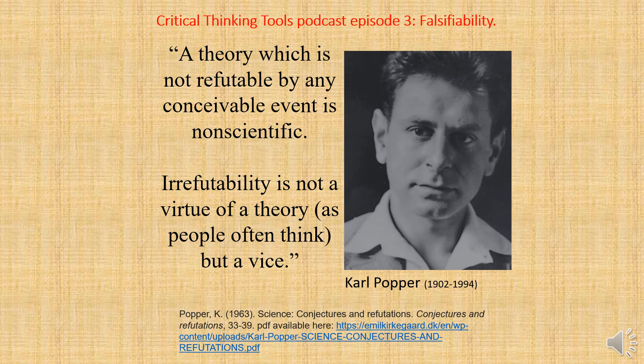Number six: 'Confirming evidence should not count except when it is the result of a genuine test of the theory, and this means it can be presented as a serious but unsuccessful attempt to falsify the theory.' Number seven: 'Some genuine testable theories, when found to be false, are still upheld by their admirers — for example, by introducing ad hoc some auxiliary assumption, or by reinterpreting the theory ad hoc in such a way that it escapes refutation. Such a procedure is always possible, but it rescues the theory from refutation only at the price of destroying, or at least lowering, its scientific status. One can sum up all this by saying that the criterion of the scientific status of a theory is its falsifiability, or refutability, or testability.'